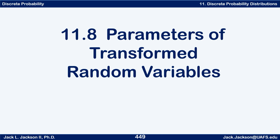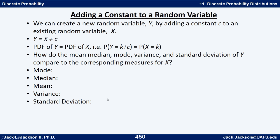In this video we're going to talk about finding parameters of transformed random variables. Basically we're going to use a random variable that exists and create a new one. One way we can create a new random variable y is by adding a constant c to an existing random variable x, so y will be x plus c.